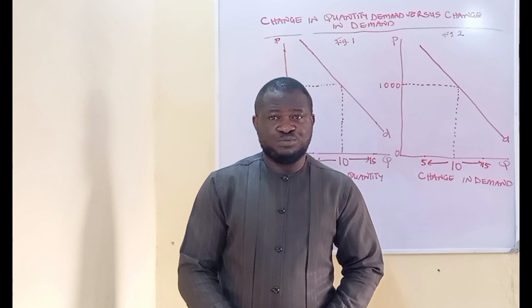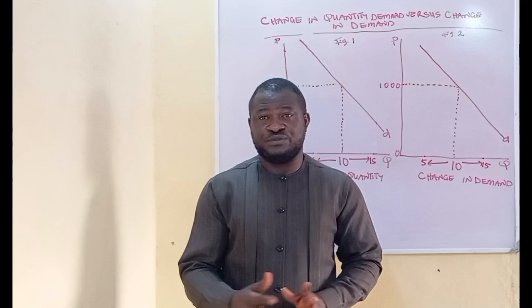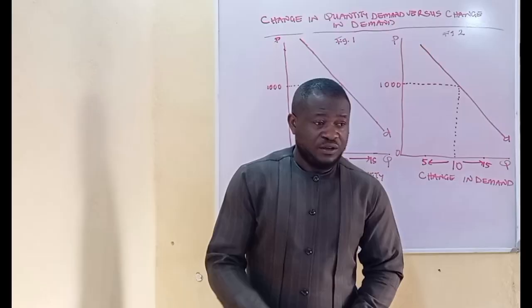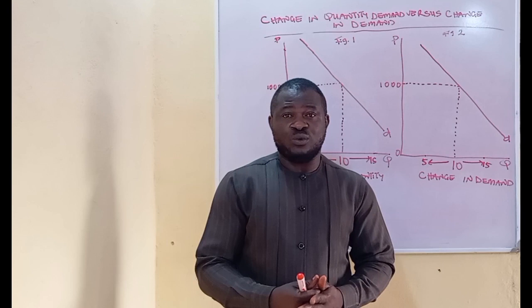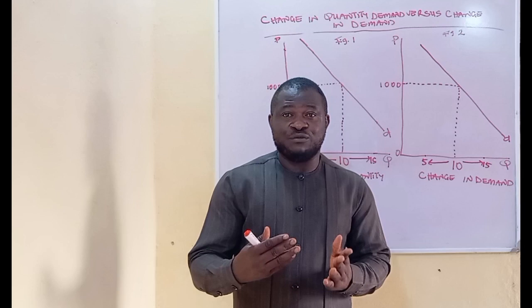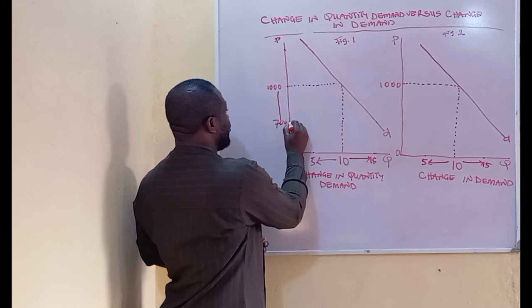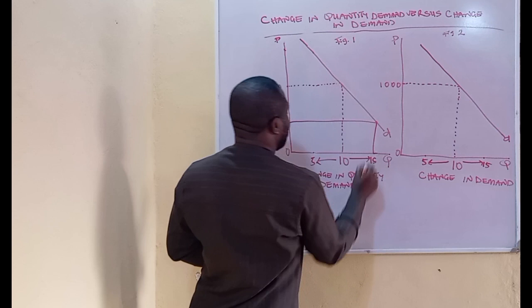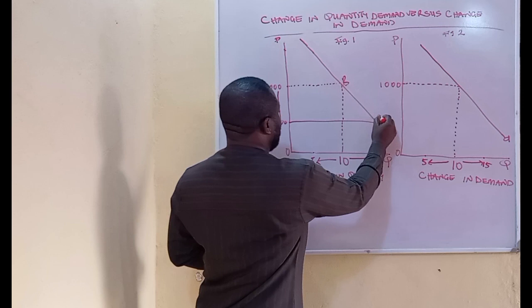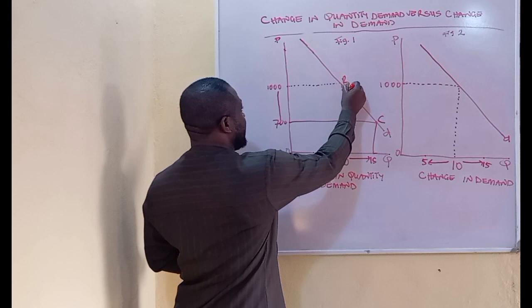One basic factor that could cause Mr. John to increase his consumption from 10 cartons to 15 cartons is already implicit in the law of demand — and that factor is the price. For instance, if the price of one carton of bottled ever water decreases from 1,000 to say 700 Naira, Mr. John can afford to purchase a greater quantity. So a decrease in price from 1,000 to 700 Naira per carton can push Mr. John to increase consumption from 10 to 15 cartons. Let's call the initial point B and the new point C — the movement from B to C is what we refer to as extension in quantity demand.